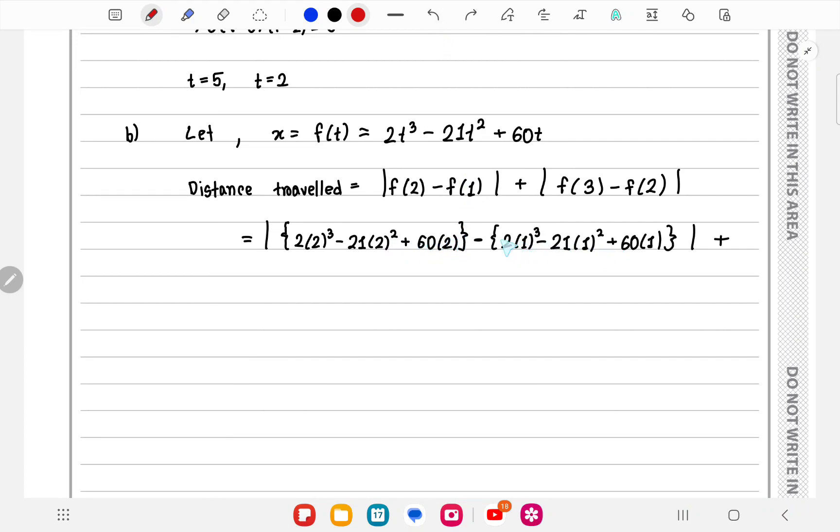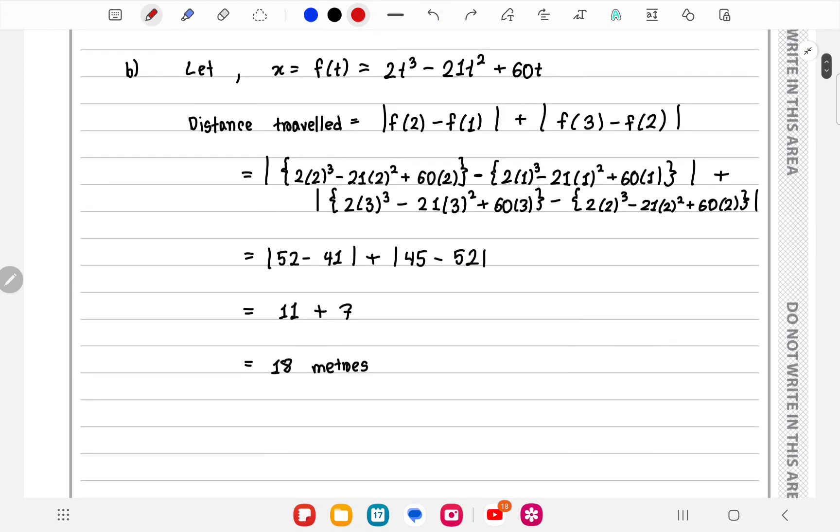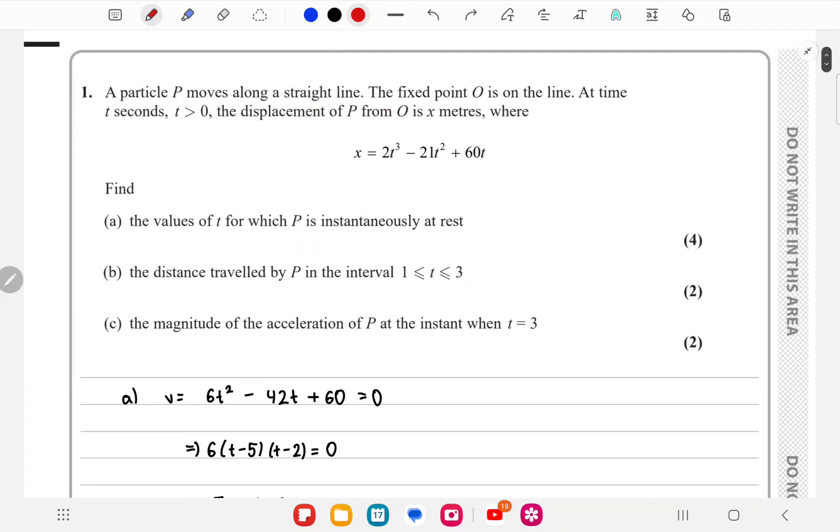This is f of 3 and f of 2 again. This will be 52 minus 41 plus mod 45 minus 52, so 11 plus 7. The distance traveled will be 18 meters.